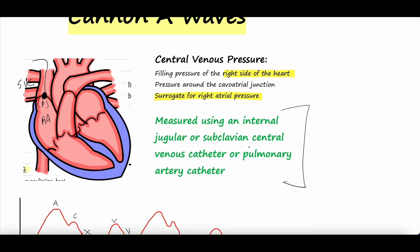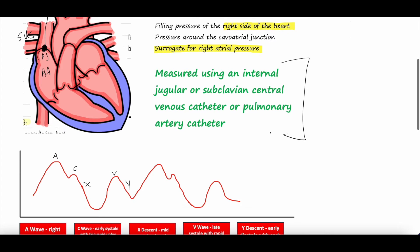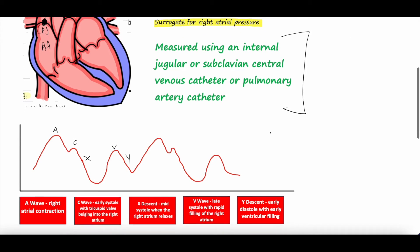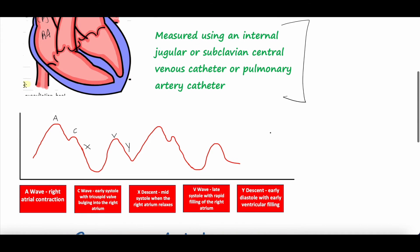As such, you need an internal jugular central line, a subclavian central line, or a pulmonary artery catheter to get these measurements. A femoral central line — a central line in one of the veins of the groin — will not give you accurate pressures. When you zero at the phlebostatic axis and transduce a waveform, this is what you will often get — this is a normal CVP waveform.